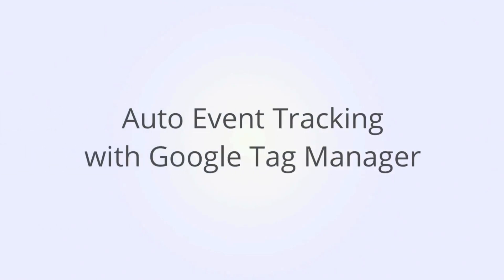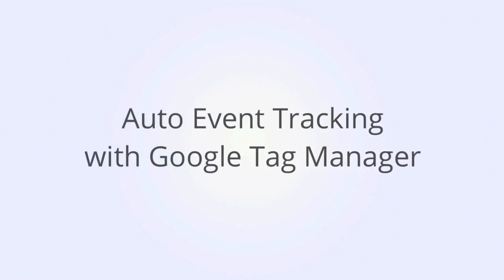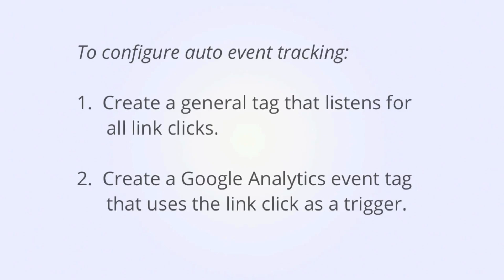So now we'll look at auto or automatic event tracking within Google Tag Manager that will allow us to track our event without actually changing the code on the page. To configure auto event tracking, we're actually going to create two separate tags. The first tag will just generally listen for link clicks on the page. The second tag will be our actual Google Analytics event tag, which will use the link click as a trigger.